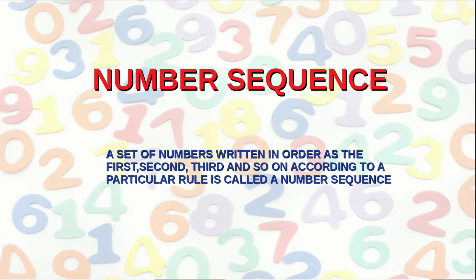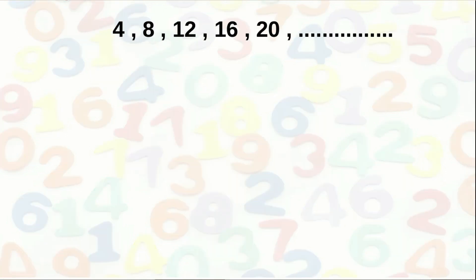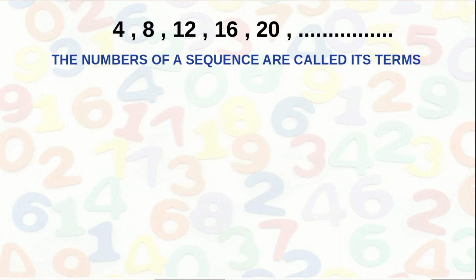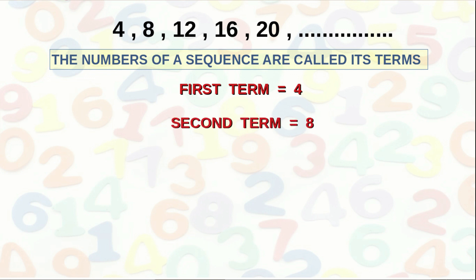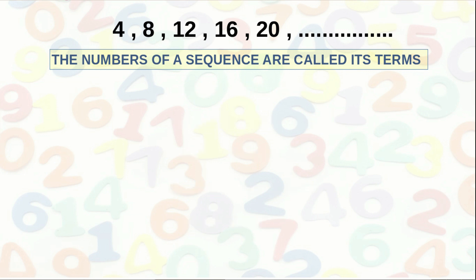A set of numbers written in order as the first, second, third, and so on according to a particular rule is called a number sequence. Consider the number sequence 4, 8, 12, 16, 20, etc. The numbers of a sequence are called its terms. The first term is 4, the second term is 8, the third term is 12, the fourth term is 16, and the fifth term is 20.